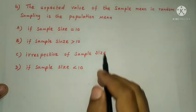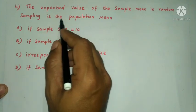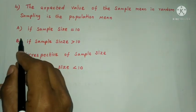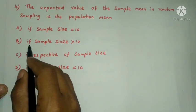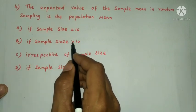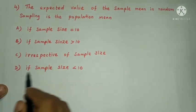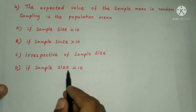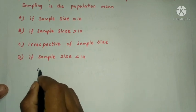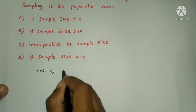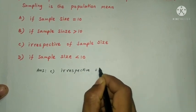Next question: the expected value of the sample mean in random sampling is the population mean — Option A: if sample size = 10. Option B: if sample size > 10. Option C: irrespective of sample size. Option D: if sample size < 10. The answer is option C: irrespective of sample size.